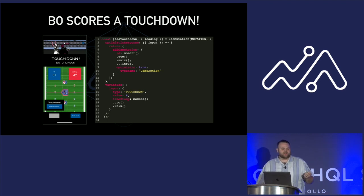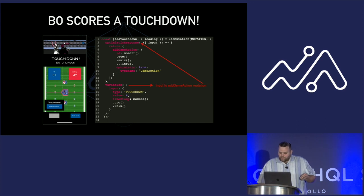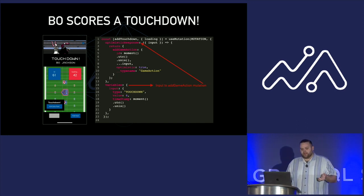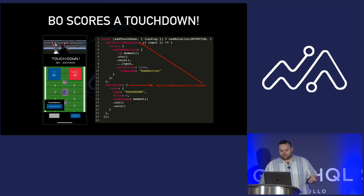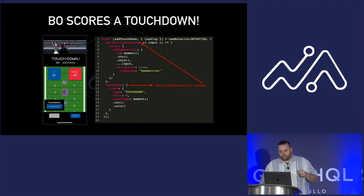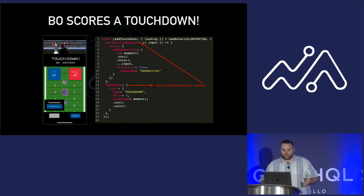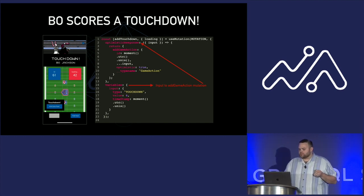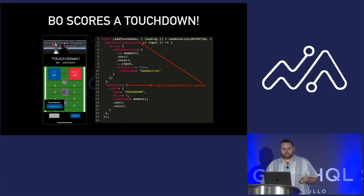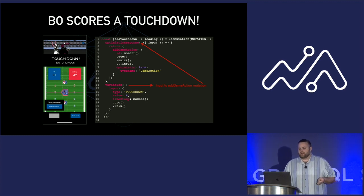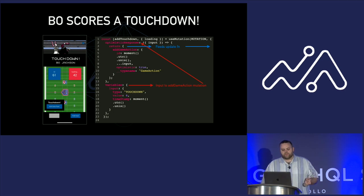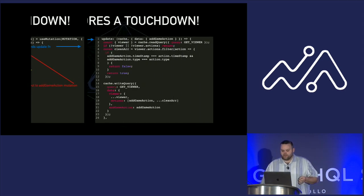Bo scores a touchdown. Starting out, we have the input to our game action mutation — those are the variables that go into our mutation. Back to a basic type touchdown, the value: six points. That's pumped into our optimistic response. In there, we create an ID that we know will be unique to the rest of the cache. If you get multiple IDs, you're going to end up with some improper values. We also have to set our type name to GameAction — without that value, the cache is going to get confused and not know what to do.